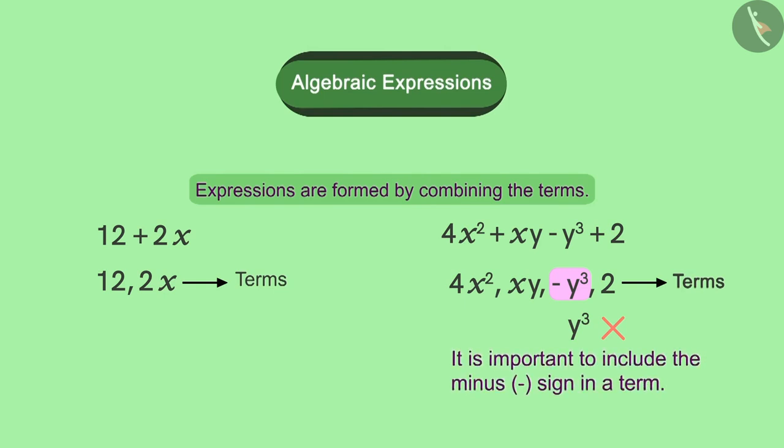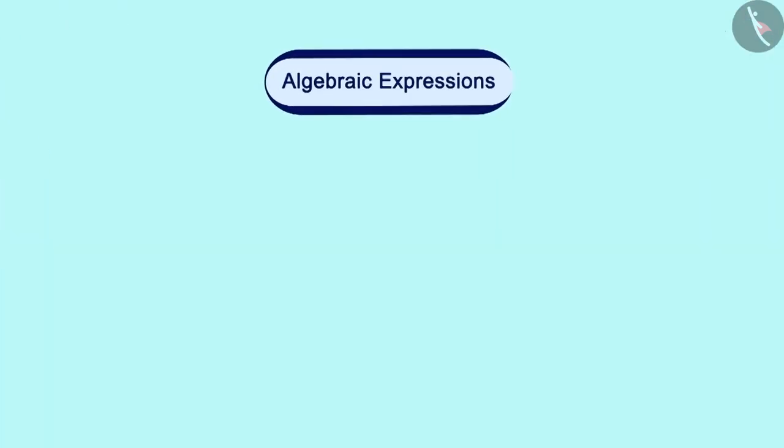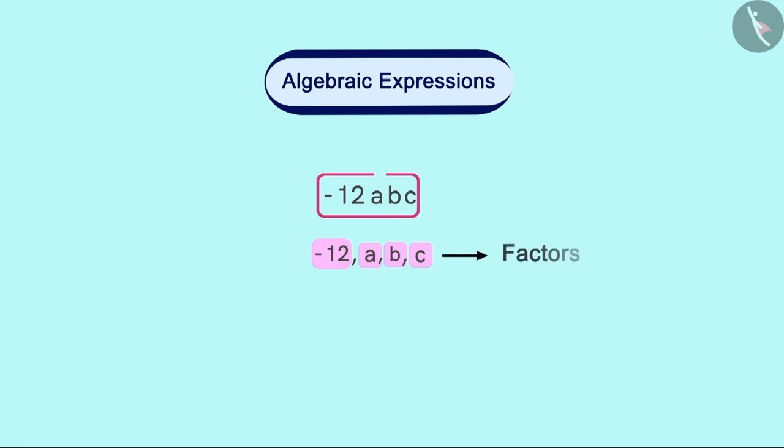Now look at this expression. This expression has only one term. This is a product of -12abc. So we can say that -12, a, b, c are the factors of this expression.